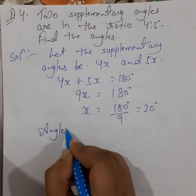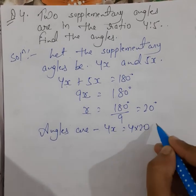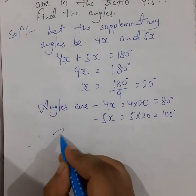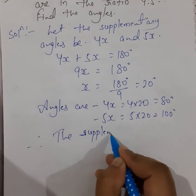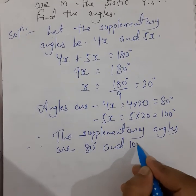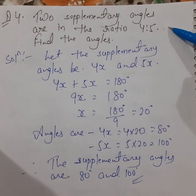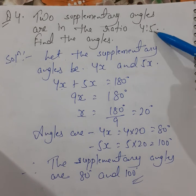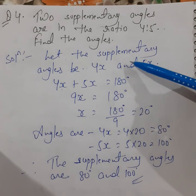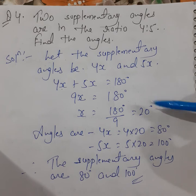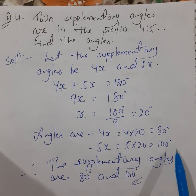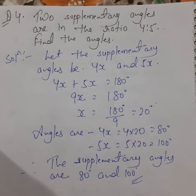The first angle is 4X = 4 × 20 = 80 degrees, and the second angle is 5X = 5 × 20 = 100 degrees. Therefore, the two supplementary angles are 80 degrees and 100 degrees.